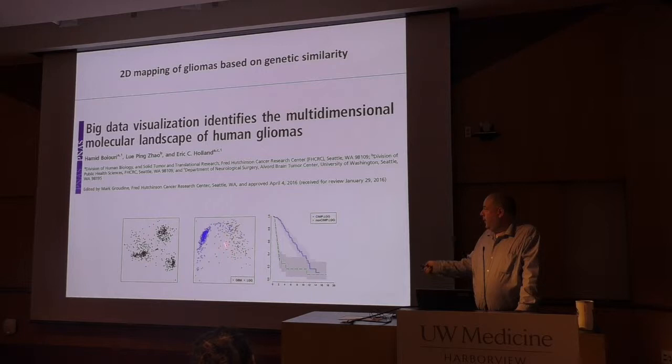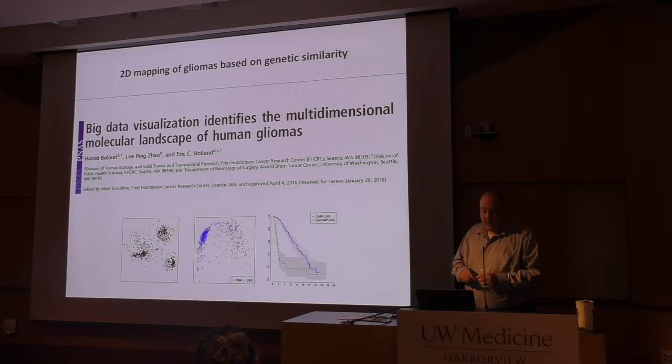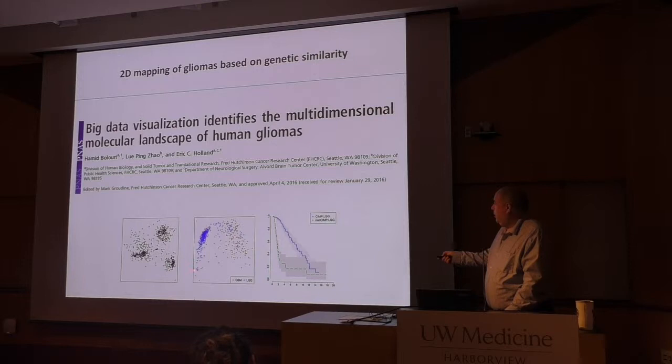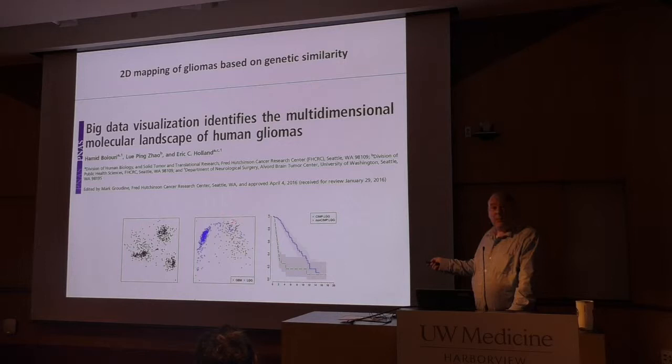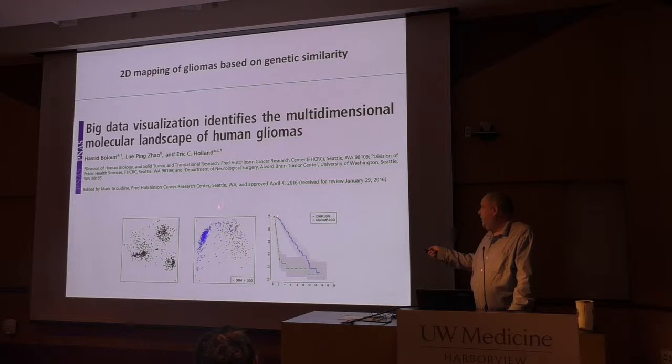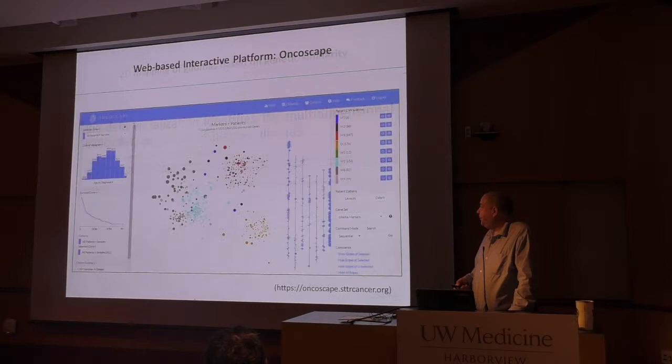They did the same with methylation status and showed you basically get two types of methylation categories: what was historically called G-CIMP — glioma CpG island methylator phenotype — which were mostly grade 2 and grade 3 tumors, and the non-CIMP or non-CpG island methylation phenotype, which is largely glioblastomas. Taking a line and splitting it gives a nice partitioning of survival characteristics based on CIMP status.